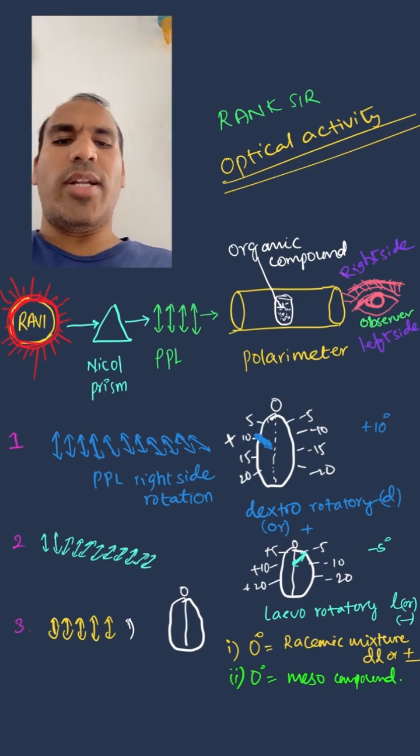The plane polarized light is passed through the organic compound placed in the polarimeter. This is the organic compound, and here is the observer.